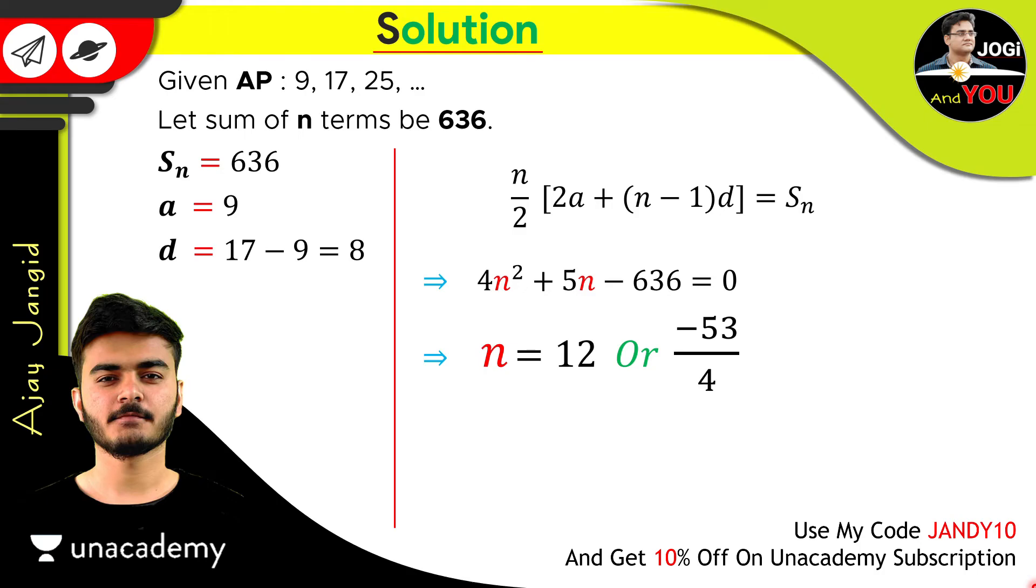So which value should we consider as our answer? And for that, we have a best way: see, the n, n is a natural number. And you know very well my friend, natural number can never be a negative number, because it starts from 1.